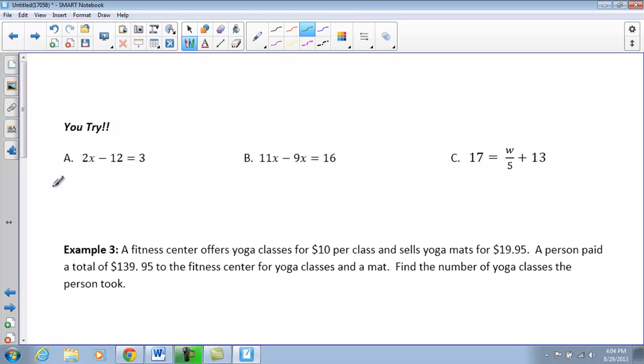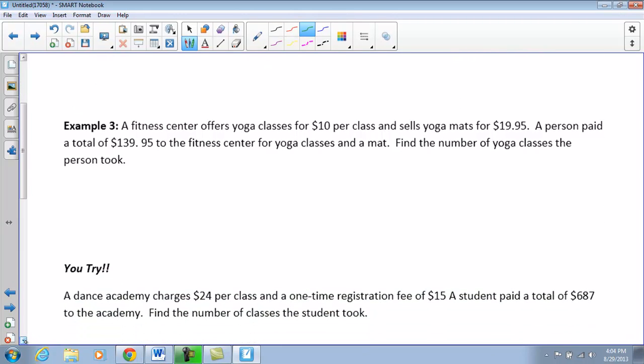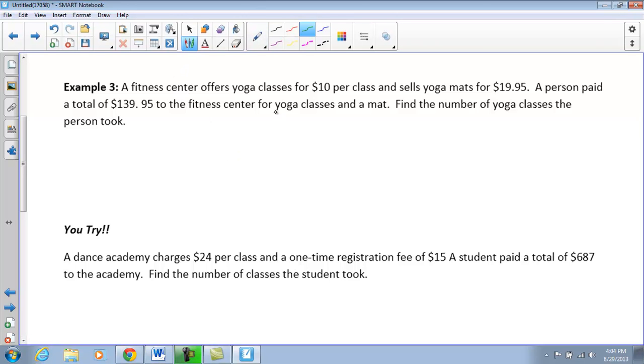Alright, the next section of U-tries, you guys are going to save for class tomorrow. The last thing we're going to do is work through a word problem. So we have for example 3. It says, a fitness center offers yoga classes for $10 per class and sells mats for $19.95. A person paid a total of $139.95 to the fitness center for yoga classes and a mat. We are going to find the number of yoga classes the person took. So the first thing I have to do is we need to find the number of yoga classes. So I'm going to identify my variable. So I'm going to say that x is equal to the number of classes.